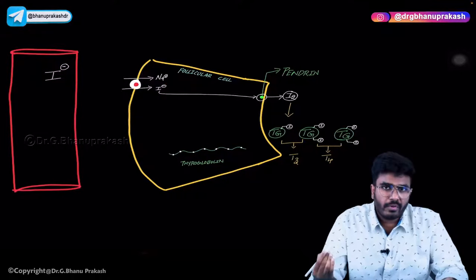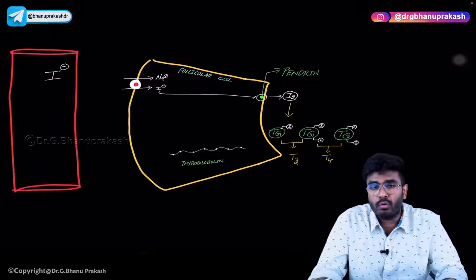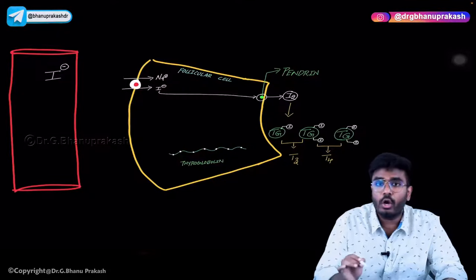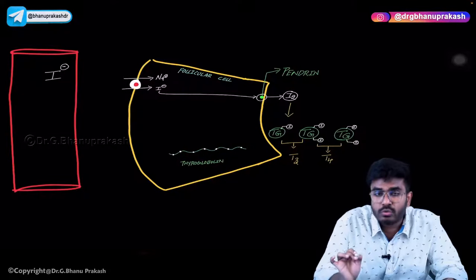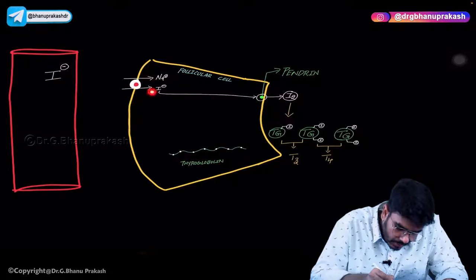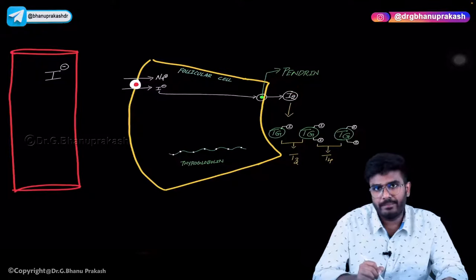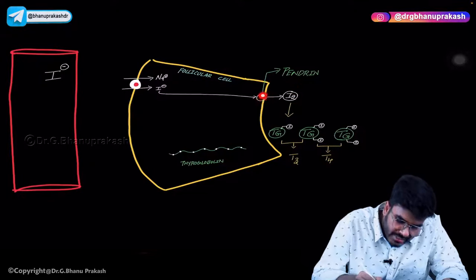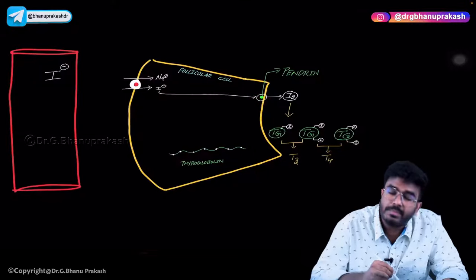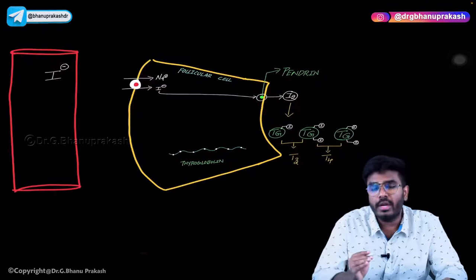For the formation of T3 and T4, we want iodine, not iodide — we don't want that negative charge. The iodides are going to be sent into a region called the colloid, with the help of a transporter called pendrin. Pendrin is a transporter present on the luminal side, or colloid side.